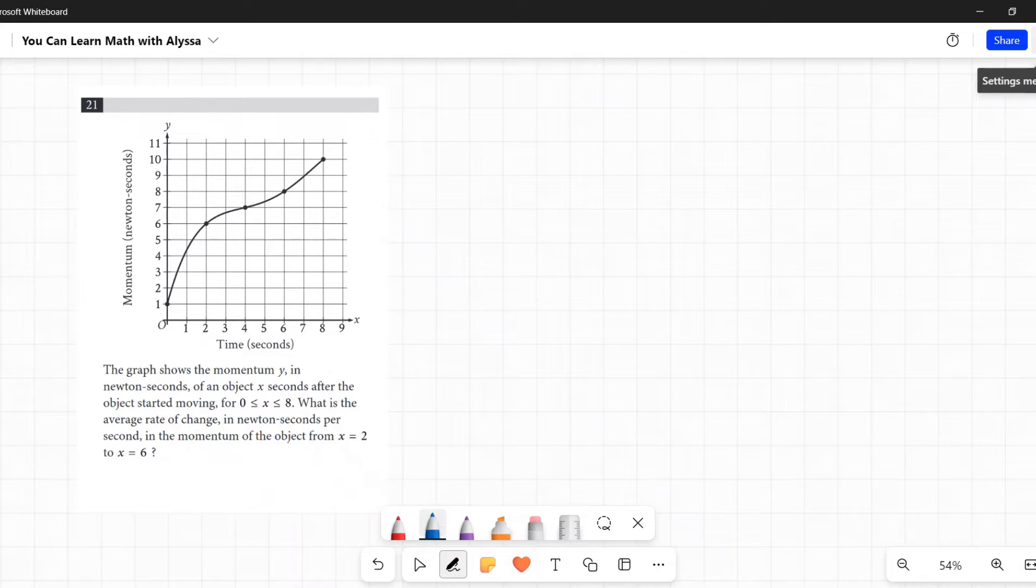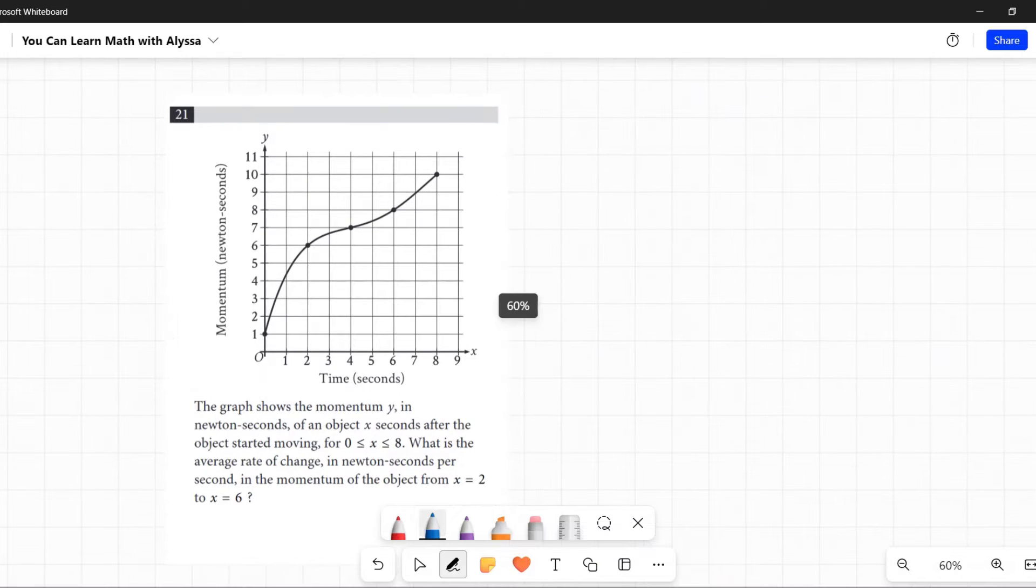Average rate of change is slope - that's what it means. So this is simpler than it seems. They're telling you it's in newton seconds per second, so there's my y values in newton seconds per second and there's my x values in seconds. So the y values over the x values, the change in y over change in x - that's slope.